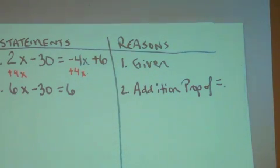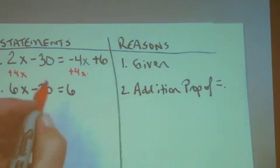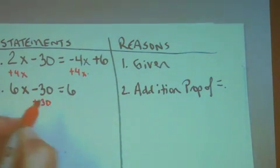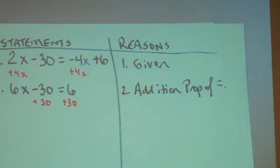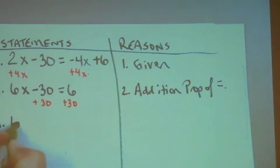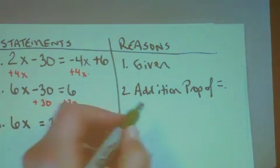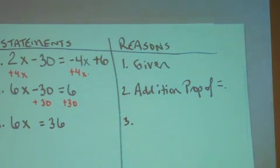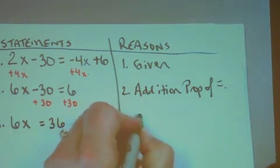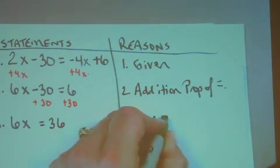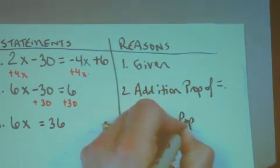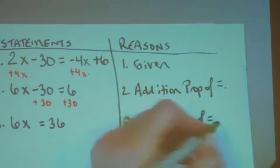Now, we need to collect our like terms. I'm going to add 30 to both sides. Now again, what I'm writing in the orange, I can do mentally. I don't need to write that down. What I would actually get is that 6x is equal to 36. Now, how did we get there? Yeah, that was also the addition property of equality. Whatever you do to one side, you do to the other side of an equation.